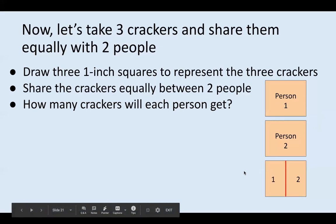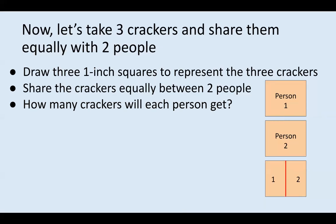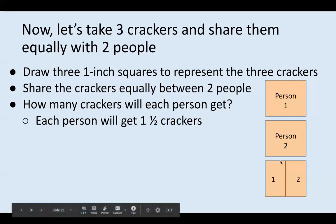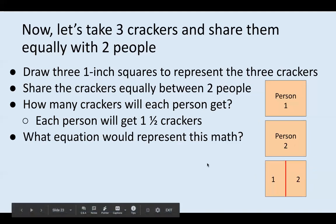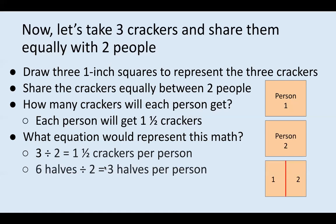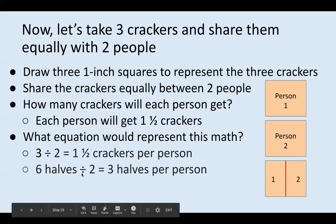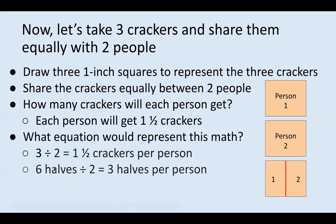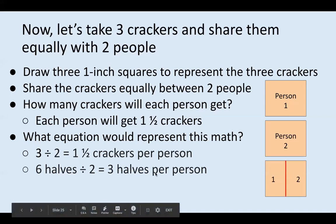Using this way to think about it, how many crackers will each person get? Hopefully you thought each person will get one and a half crackers, because person one gets one whole and a half, and person two gets one whole plus one half. What equation will represent this math? By now you probably recognize it's going to be a division equation. What was our number that we were splitting apart, and how many groups do we need to make? Write this down in your journal. We had three crackers and needed to share them equally between two people, so we did three divided by two, which equals one and a half crackers per person. Or we could think of it as six halves divided by two equals three halves per person.